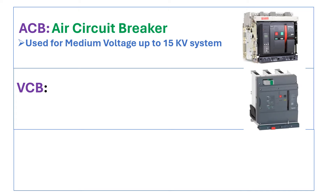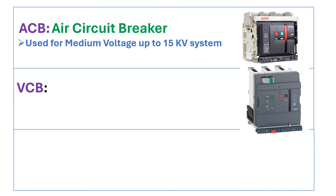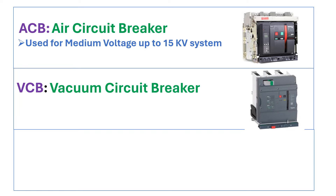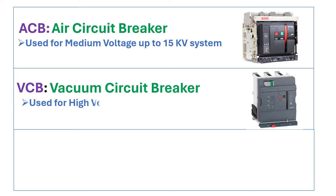Second is VCB. VCB stands for vacuum circuit breaker, and it is used for high voltage systems, that is up to 33kV or more.